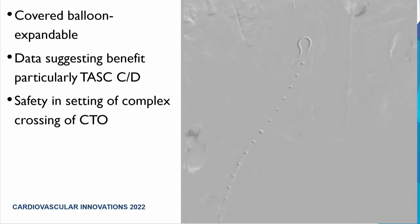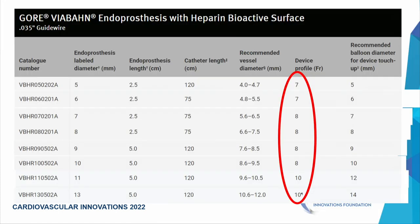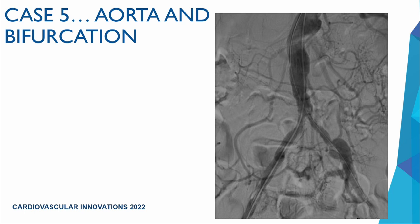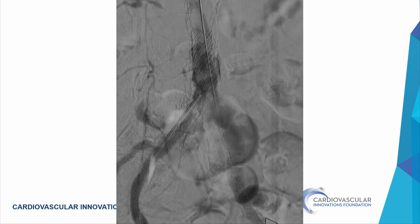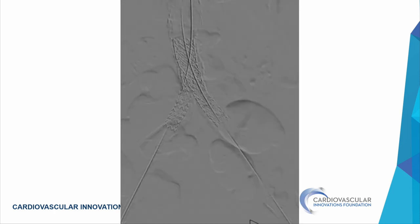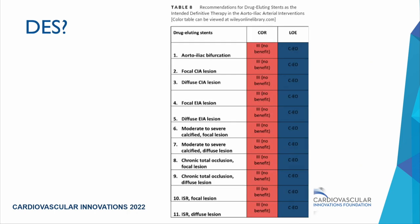Covered balloon expandables have good data particularly in TASC C/D lesions, but the question remains whether to use them universally or selectively where there's clear benefit. Covered stents are larger, requiring seven to eight French sheaths. For aortic and bifurcation treatment, the CERAB technique — covered endovascular reconstruction of the aortic bifurcation — is supported by good data: an aortic stent placed with two pant-leg stents extending into it provides excellent angiographic results and protected treatment of the aortoiliac bifurcation. There is no data supporting drug-eluting stents for aortoiliac disease.